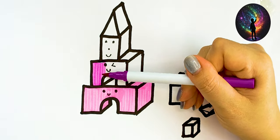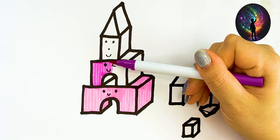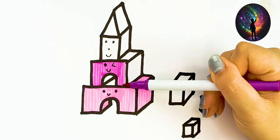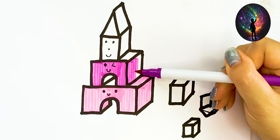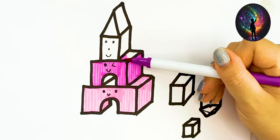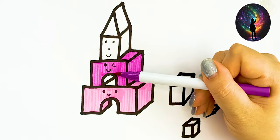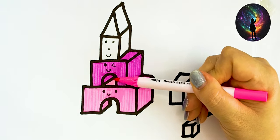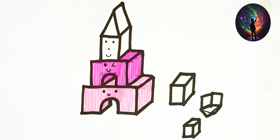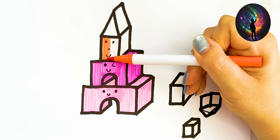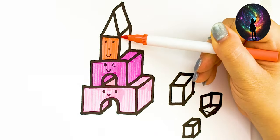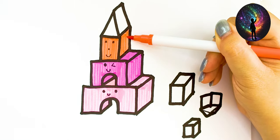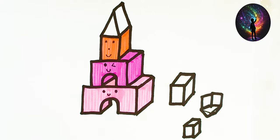Old MacDonald had a farm, E-I-E-I-O, and on his farm he had a cow, E-I-E-I-O, with a here and a there, here, there, everywhere. Old MacDonald had a farm, E-I-E-I-O, and on his farm he had a pig, E-I-E-I-O, with a here and a there, here, there, everywhere.